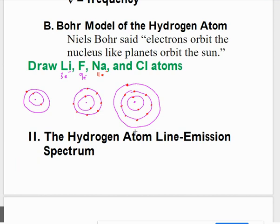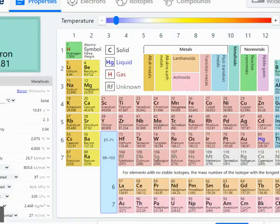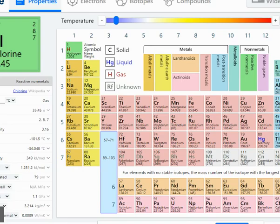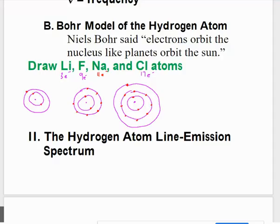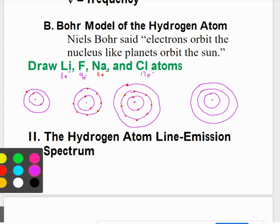Lastly, chlorine. Chlorine has 17 electrons. Its atomic number is 17. We're going to draw the nucleus, energy level one, energy level two, energy level three.